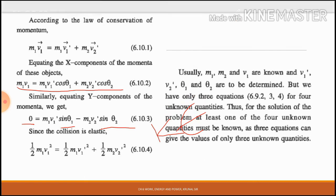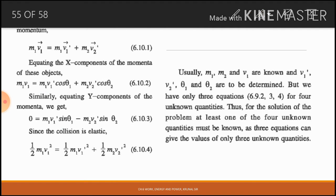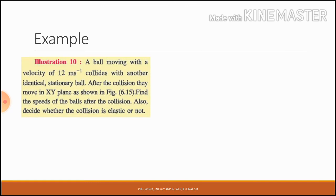Usually m1, m2, and v1 are known, and v1', v2', theta1, theta2 are to be determined. But we have only 3 equations and 4 unknown quantities. Thus, for the solution of the problem, at least one of the four unknown quantities must be known. Based on this theory, we will now solve an example to clearly understand the concept.